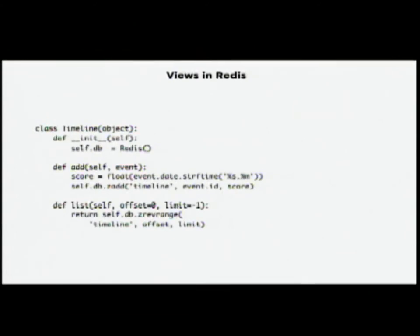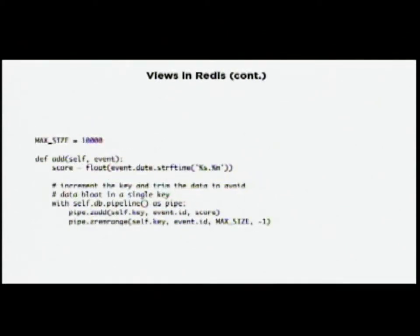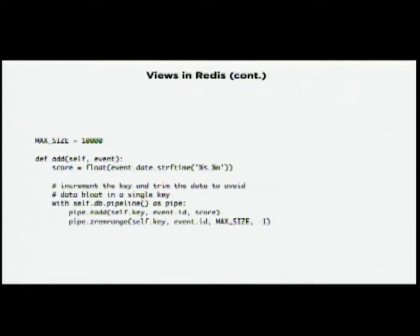Redis can handle activity streams very well using sorted sets. In this case, the event ID is the key and the score is the timestamp, so when you pull events out they're sorted by time. Because we want predictability, we need a set of maximum size. The power of Redis is you can pipeline commands — we add to the set with ZADD and then trim it with ZREMRANGEBYRANK. So in one atomic operation, we're adding the item and trimming the tail of the set, giving us a very predictable sized timeline stored in Redis.